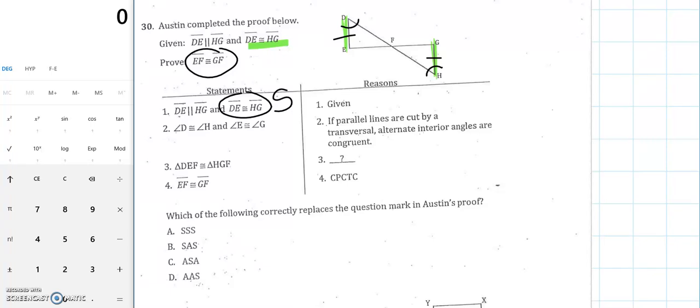Now the first one talks about the given information and they include that DE is congruent to HG. So that gave us a side length that was congruent between the two. Now the next one says angle D is congruent to angle H. Okay, now those two are congruent because of that Zorro Z, if you remember. So if we trace the Z in this one, we would see D and H land in the corners.